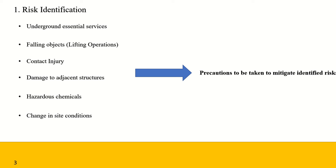As you can see in this slide, the risks relevant to the construction site of the excavation projects include underground essential services, falling objects, contact injury, hazardous chemicals, damage to adjacent structures, and change in site conditions. To address these risks, mitigation actions are required to be taken.